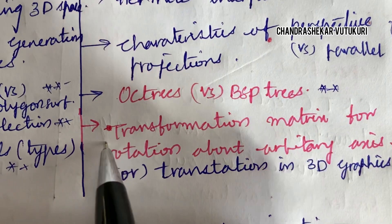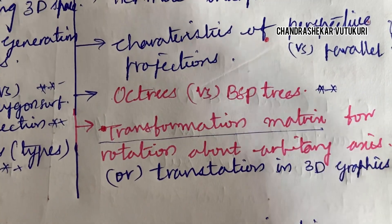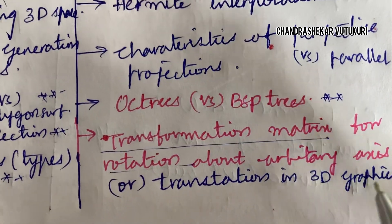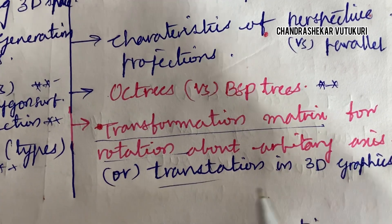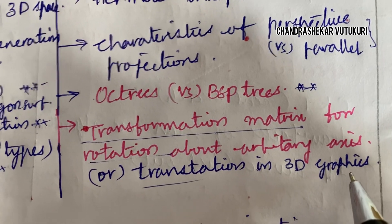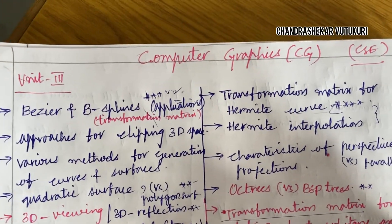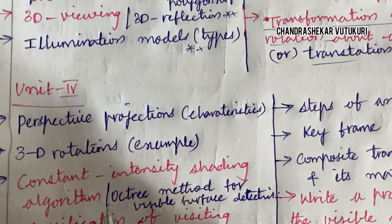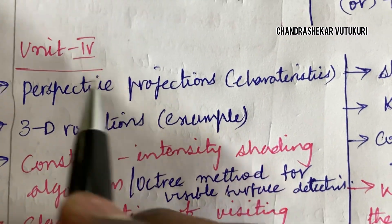Transformation-related — you are going to get one question related to the rotation or translation in 3D graphics. These are the important questions for unit 3 for the course Computer Graphics. Hope you are taking the exams well.